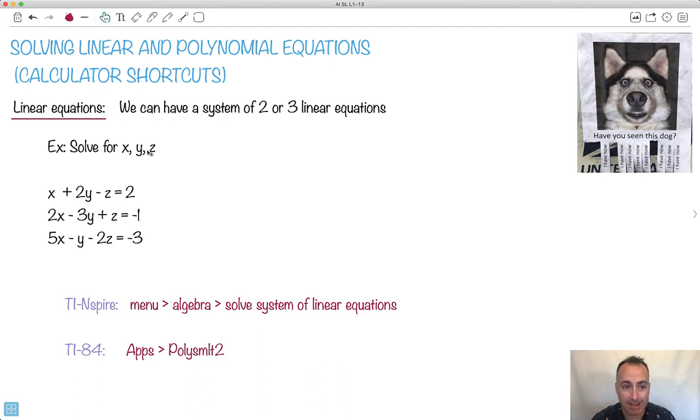We're supposed to solve for x, y, and z. You can tell I'm Canadian, at least not American. The Americans say z, I say zed. So we have a system of three different equations.